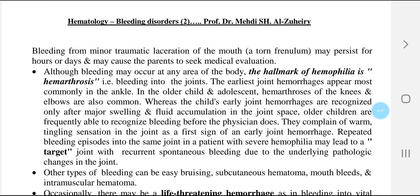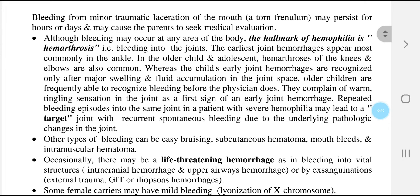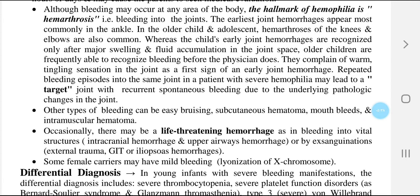The earliest joint hemorrhages appear most commonly in the ankle. In older children and adolescents, hemarthrosis of the knee and elbows are also common. Whereas young children's early joint hemorrhages are recognized only after major swelling and fluid accumulation in the joint space, older children are frequently able to recognize bleeding before the physician does — they complain of a warm tingling sensation in the joint as a first sign. Repeated bleeding into the same joint in severe hemophilia may lead to a target joint with recurrent spontaneous bleeding due to underlying pathologic changes.